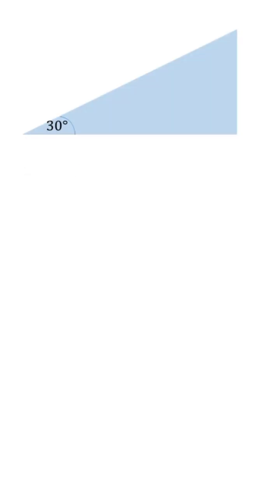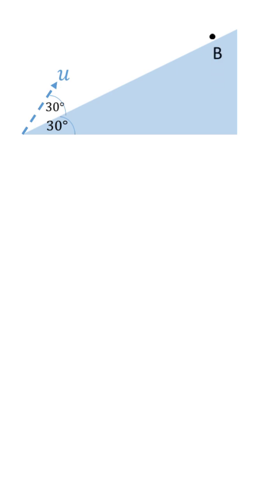This is our inclined plane with an inclination of 30 degrees, and this is our projectile. We projected this projectile at an angle of 30 degrees from this inclination with speed u, so it goes like this.